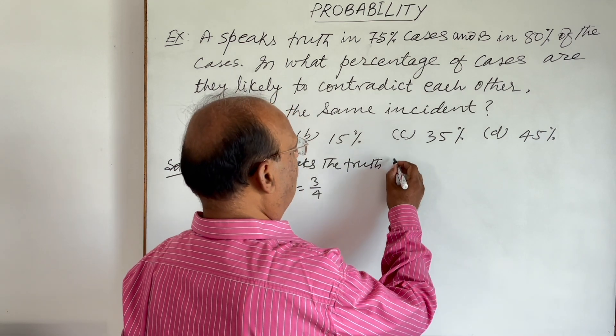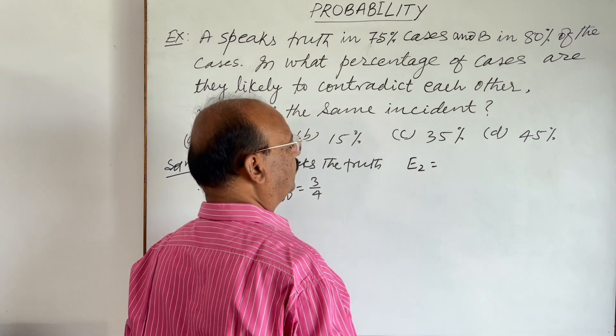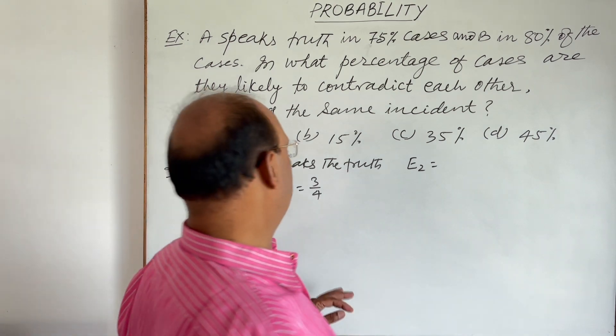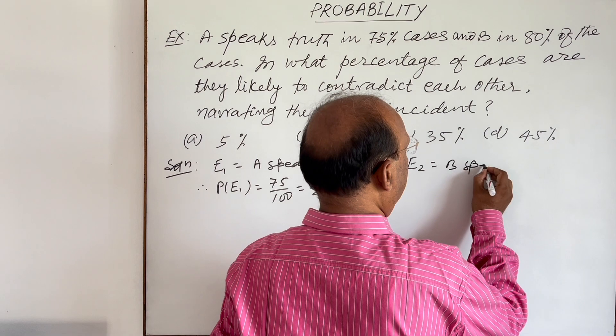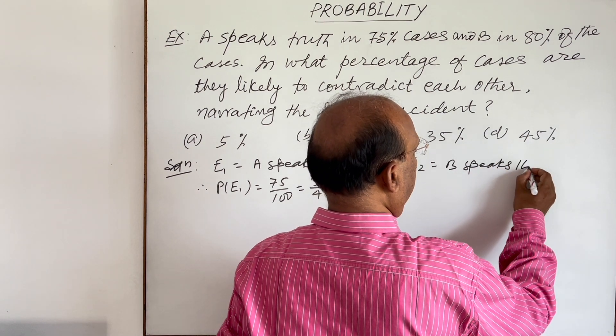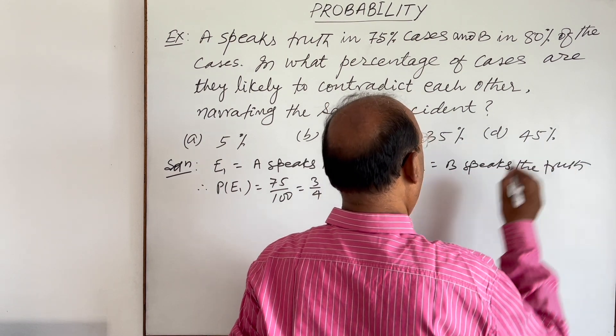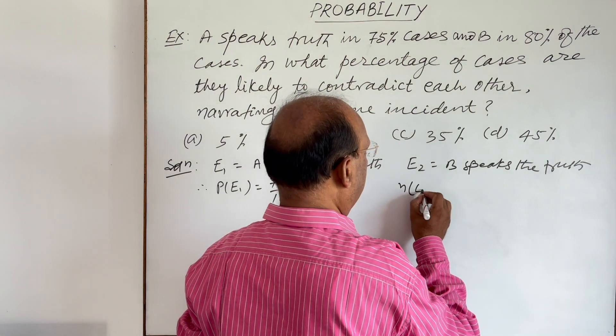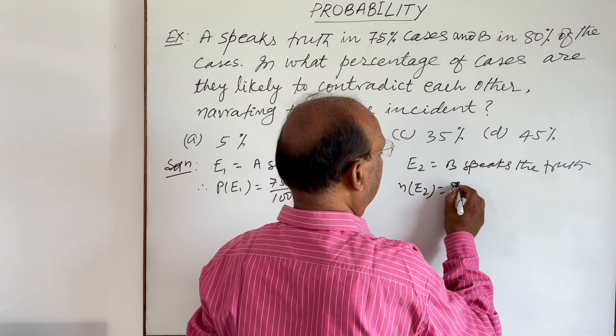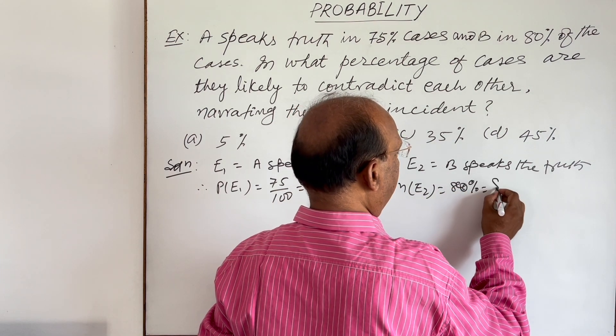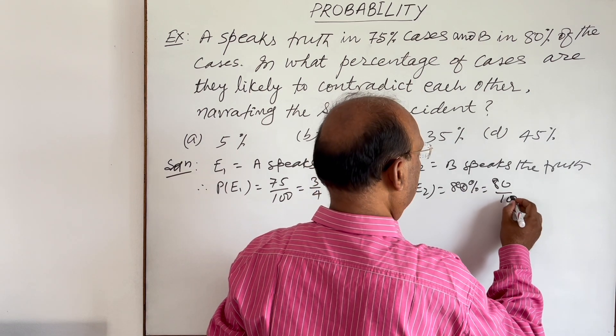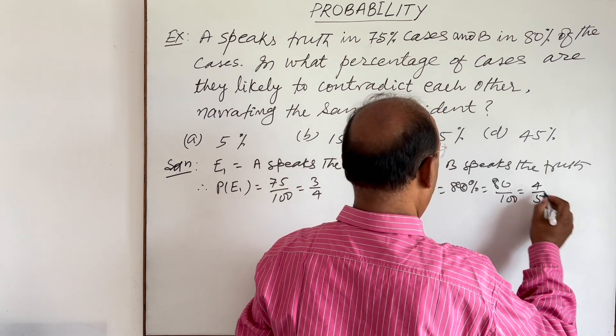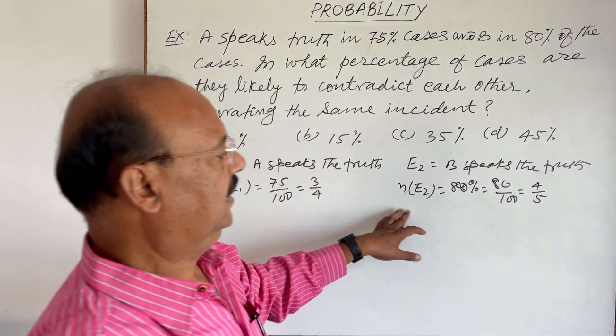Now let us suppose that E₂ is the event when B speaks the truth. What is the percentage for B? 80%. So P(E₂) is equal to 80% means 80 by 100. So this is 4 by 5. This is the value of P(E₂).